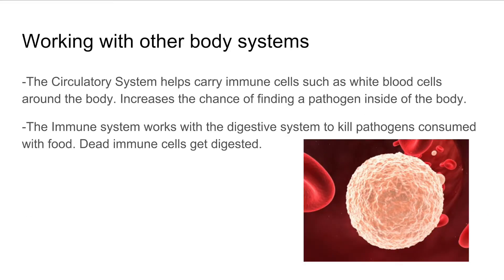Working with other body systems: the circulatory system helps carry immune system cells, such as white blood cells, around the body, increasing the chance of finding a pathogen inside the body. The immune system works with the digestive system to kill pathogens consumed with food, and dead immune cells get digested by the digestive system.